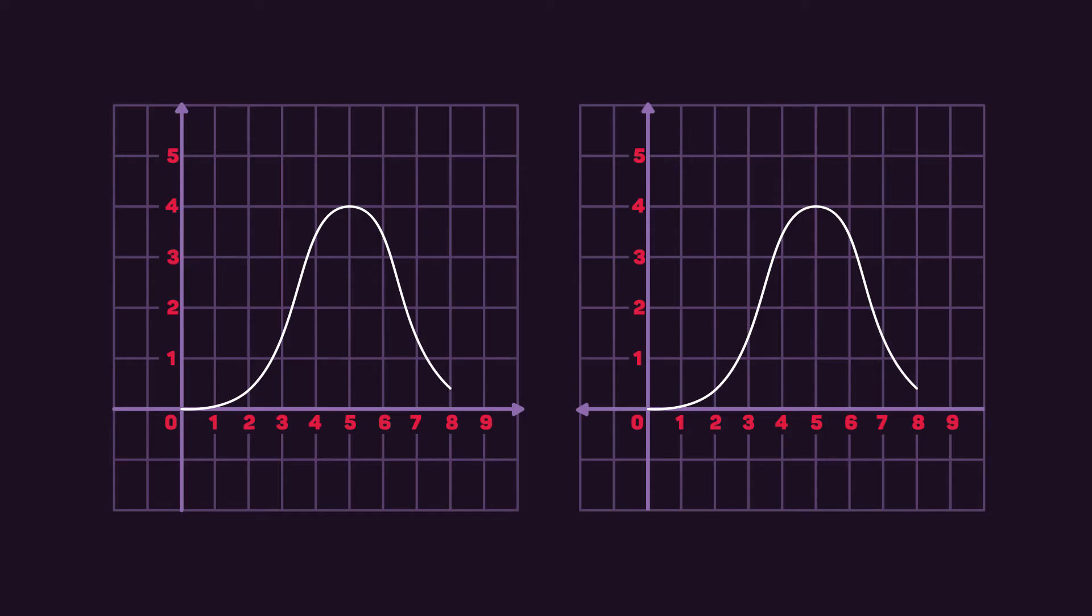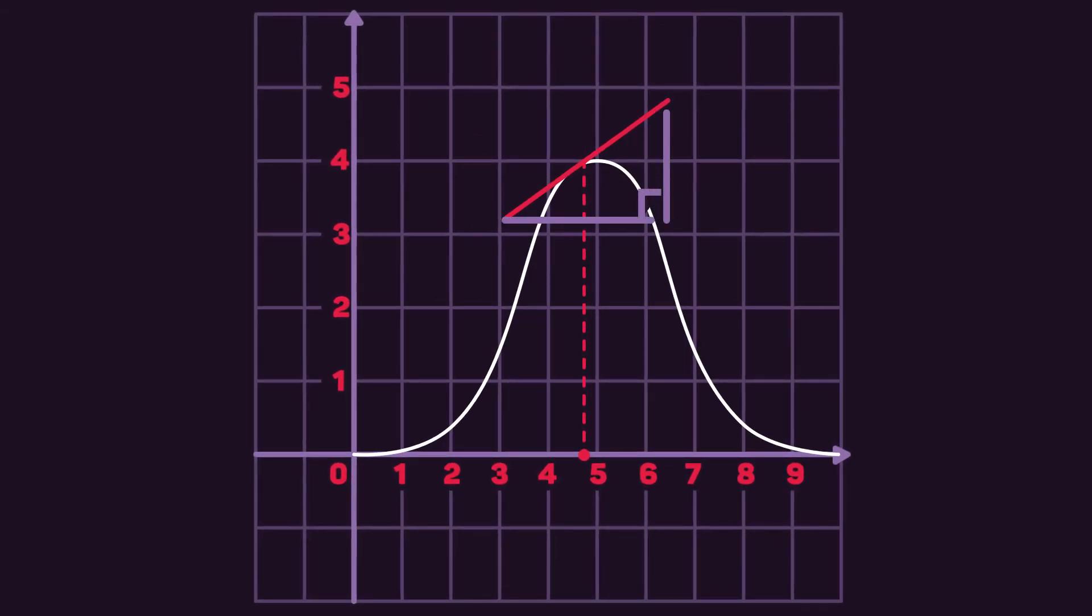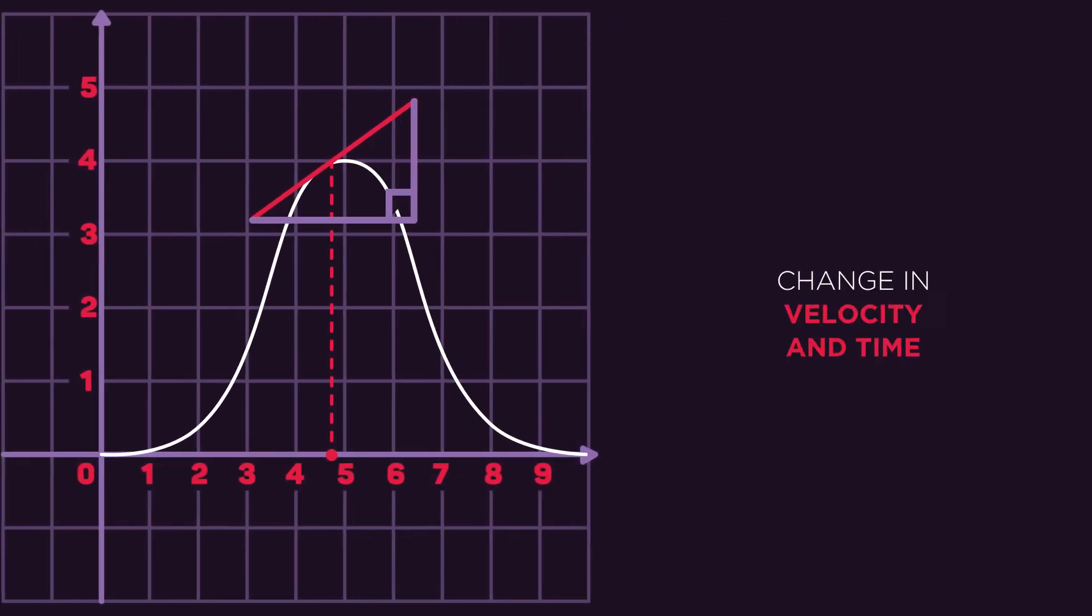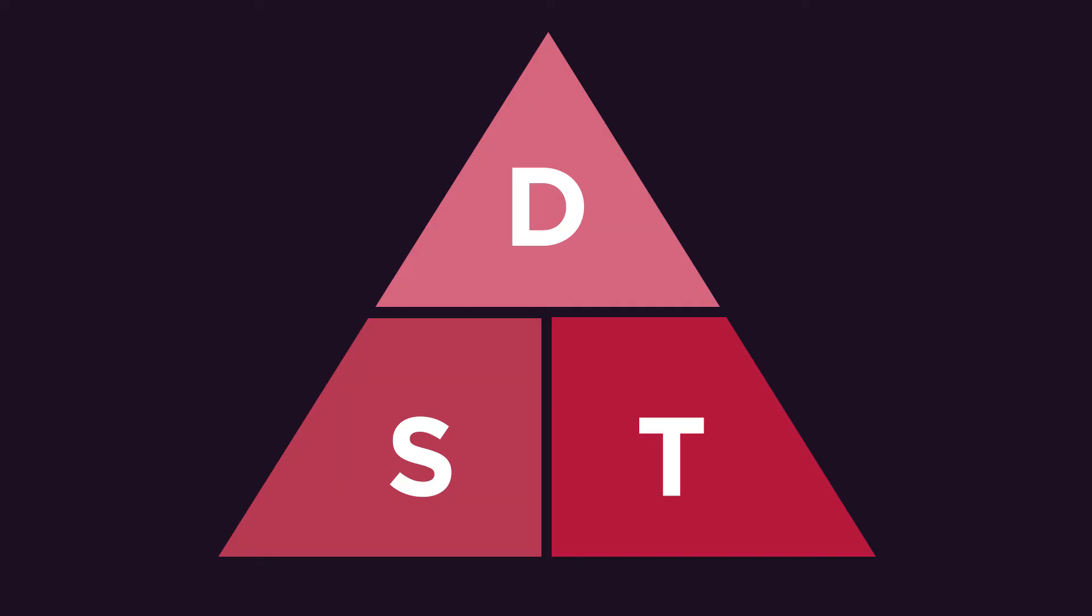To find the exact acceleration from a curved graph, you need to find the gradient at that point in time using a tangent. This is a line drawn at 90 degrees to the curve at that point. Use this to form a right-angle triangle and find the change in velocity and time.